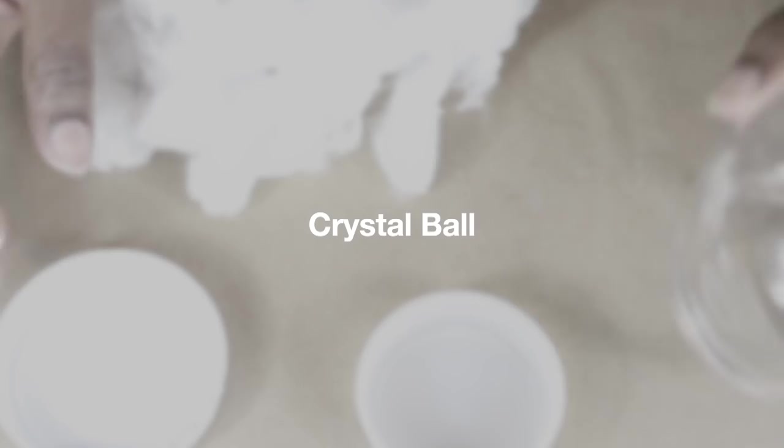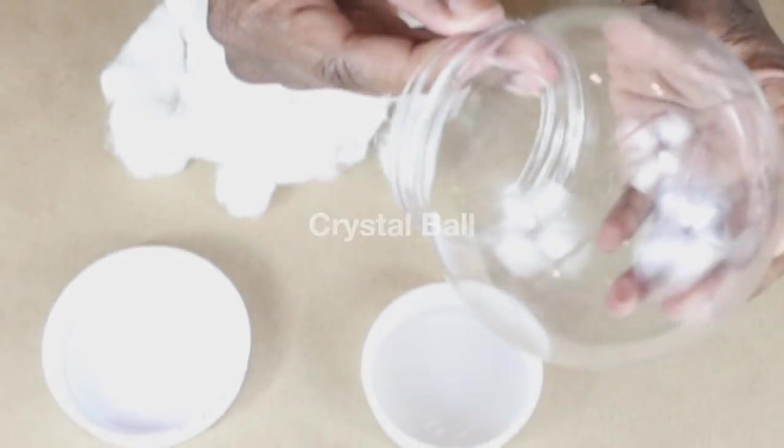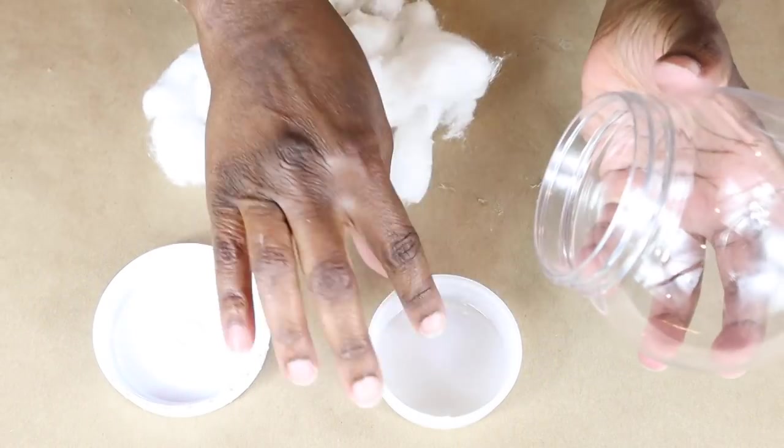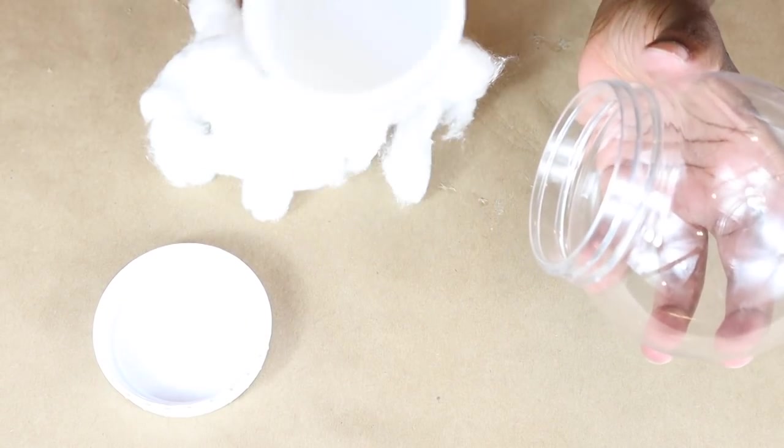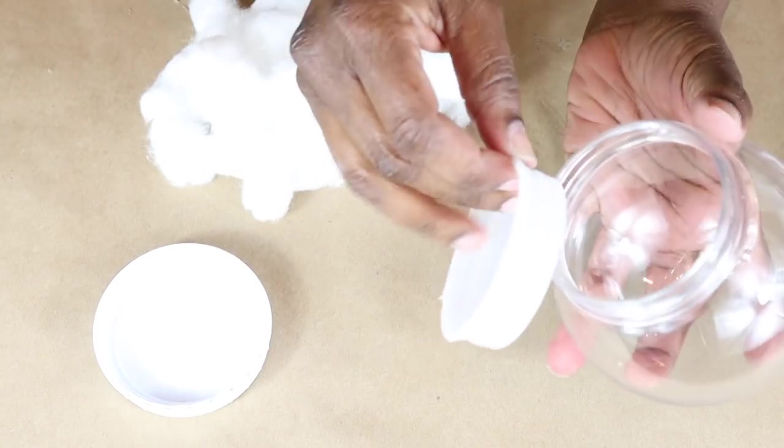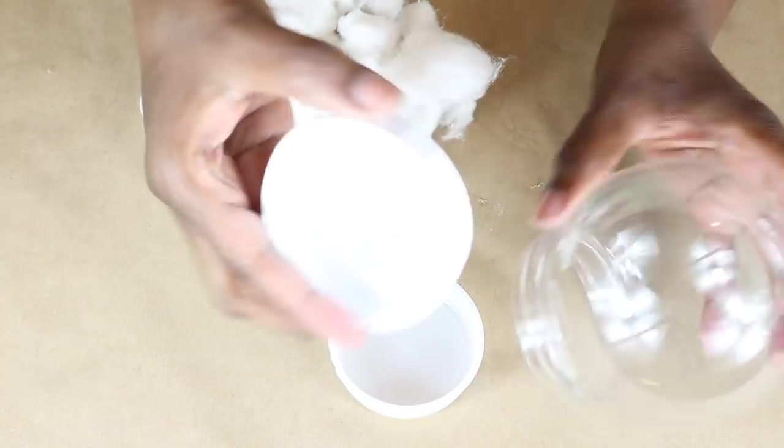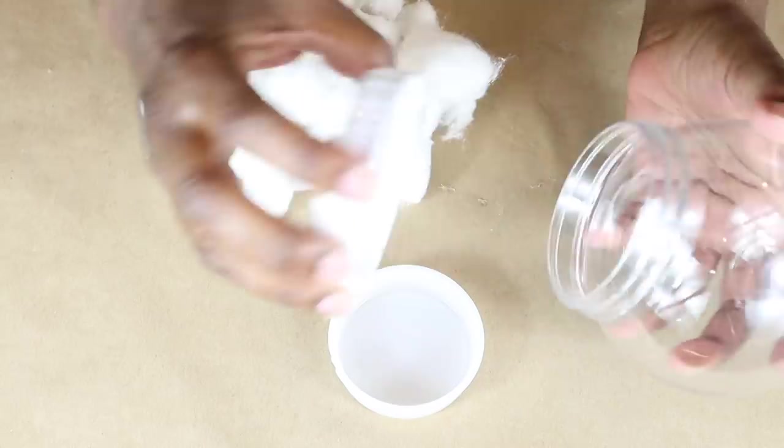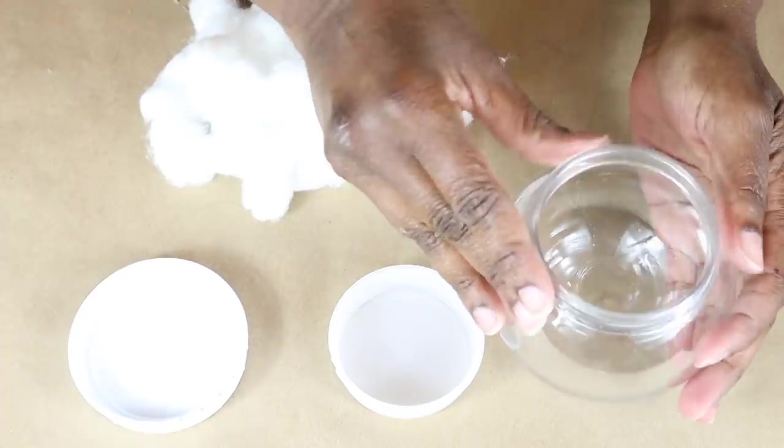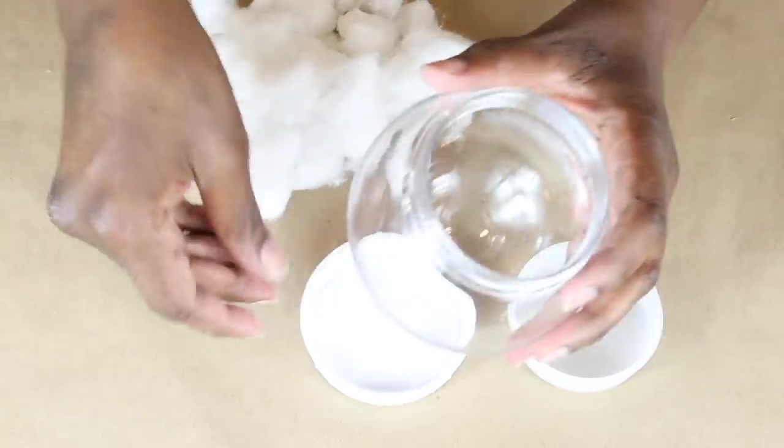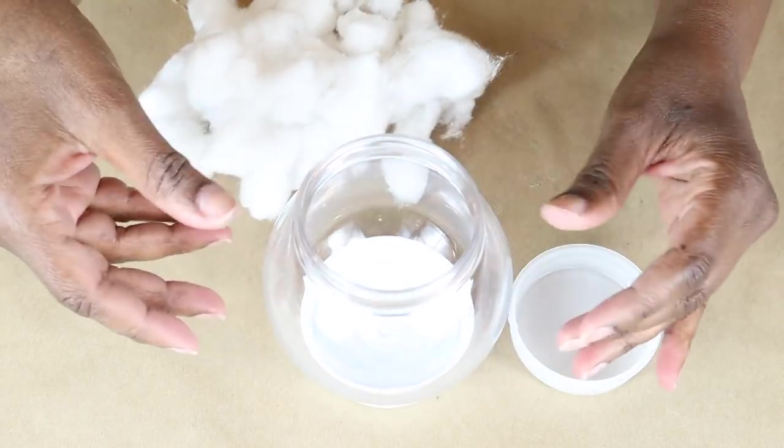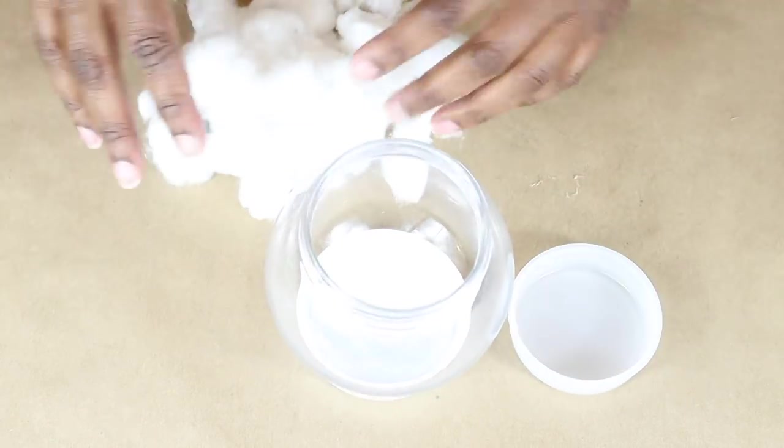For our next DIY, we're going to make a crystal ball and I will be using this DIY snow glow kit from Dollar Tree. It comes with this stopper, which makes it waterproof. And it also has this screw on cap. So I'm going to go ahead and turn it upside down. I'm going to set it on the base on the cap to keep it steady.